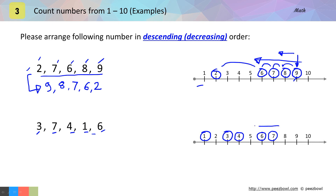Now write the numbers in reverse order — that is, we need to write the number which appears on the right first, then move leftward. So numbers in descending order will be seven, six, four, three, and one.